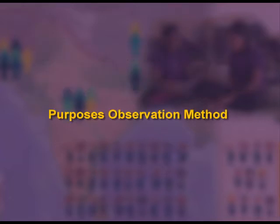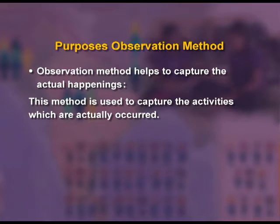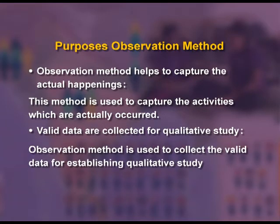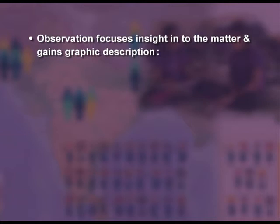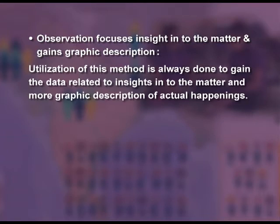Purpose or advantages of observation method: Observation method helps to capture the actual happenings — it is used to capture activities which are actually occurring. Valid data is collected for qualitative study; observation method is used to collect valid data for establishing qualitative study. Observation also focuses on gaining insight into the matter and obtaining more graphic description of the actual happenings.